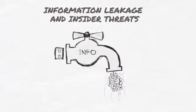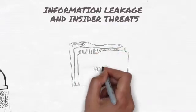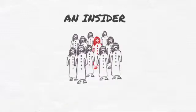Information Leakage and Insider Threats. The most important thing to our organization is our information. The easiest way for someone to cause harm to our organization is by compromising an insider.